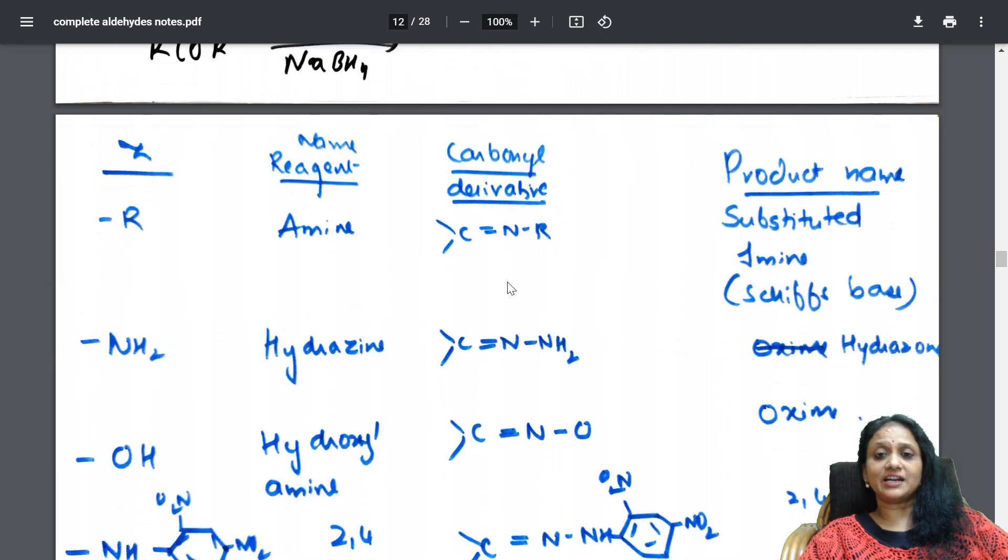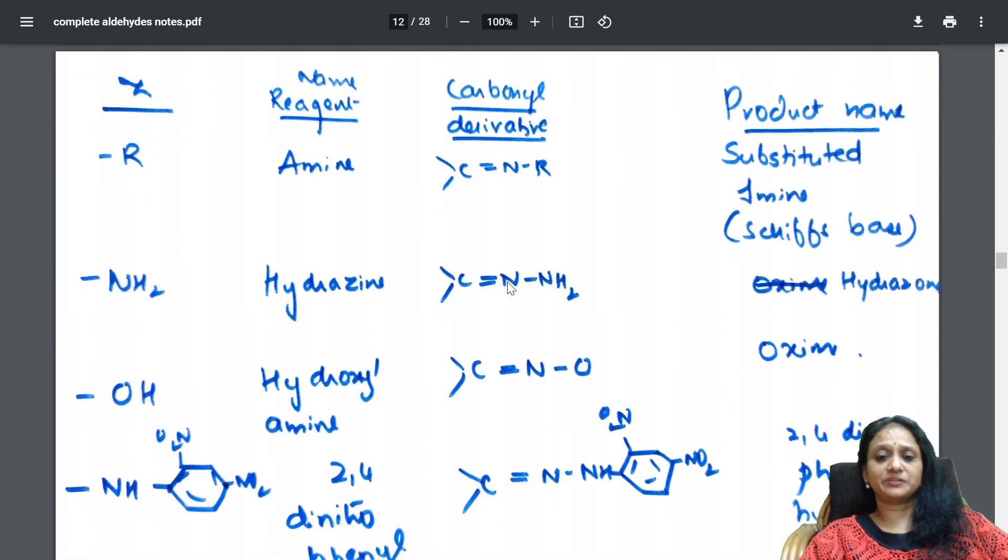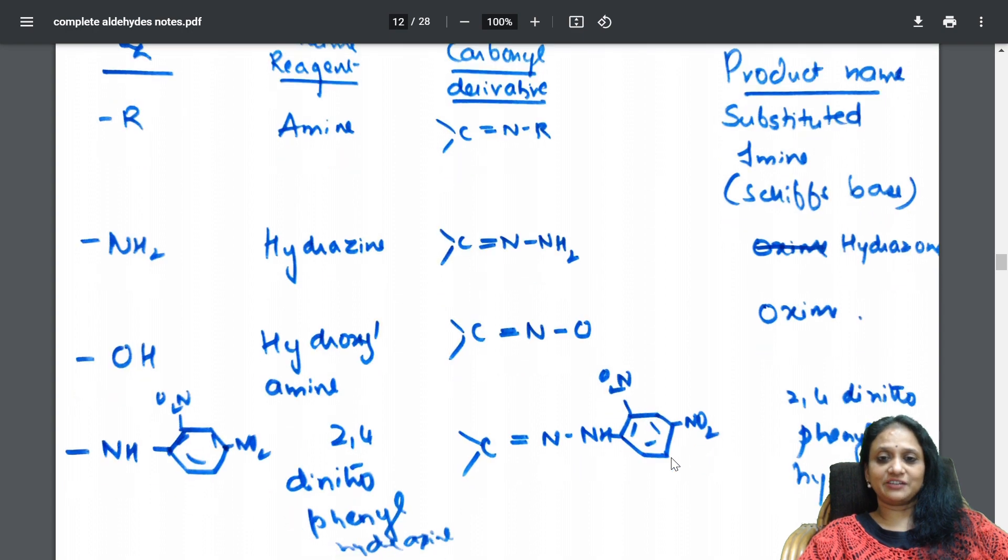So, see here students. All the nucleophilic addition reactions are in one page. Perfectly see. Everything is in one page. So, the value of Z is what? What is the reagent? What is the carbonyl derivative you get? And how do you name that? Is it fine? Yes. Perfectly fine.